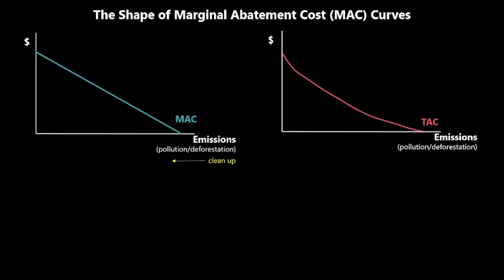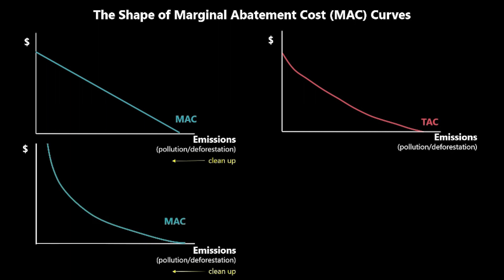Another realistic marginal abatement cost curve is one that's non-linear and downward sloping. As we clean up more and more emissions and approach a level of zero — say at emissions level E1 — that very last unit of pollution being cleaned up actually approaches infinity in cost. It's very expensive to get rid of all waste.